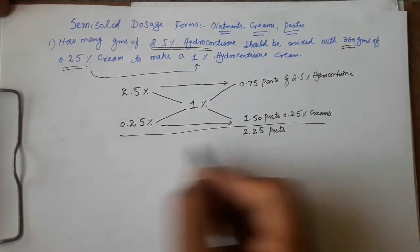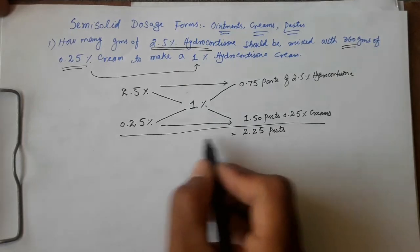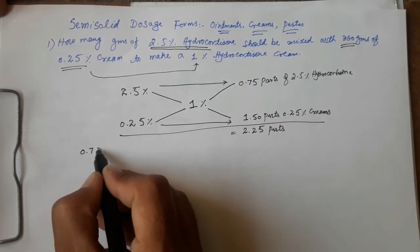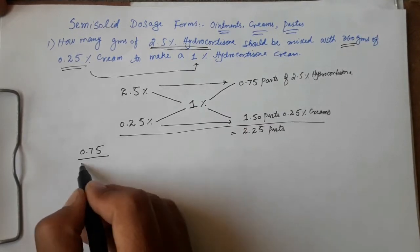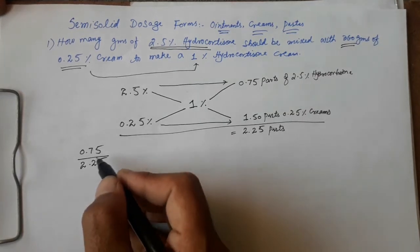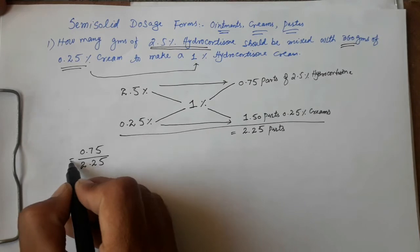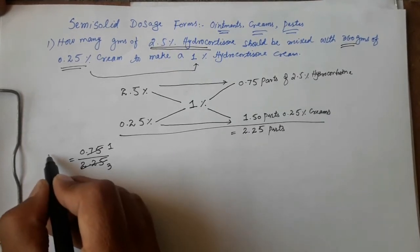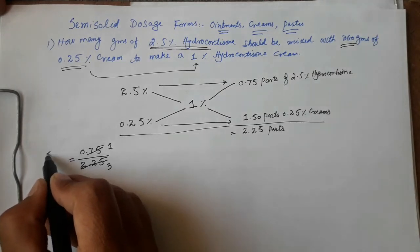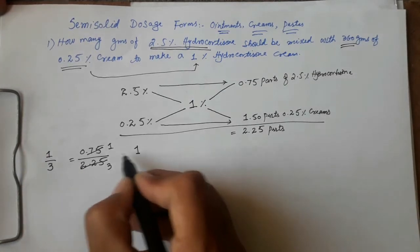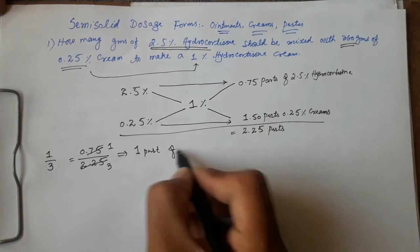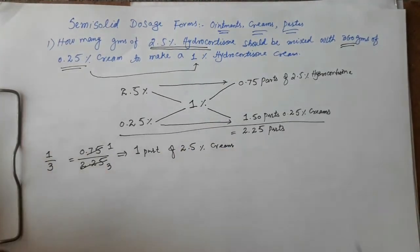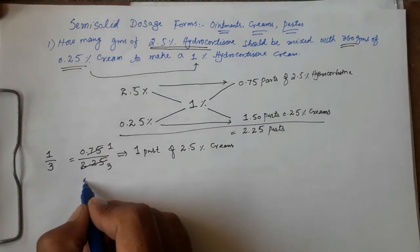So we have a total of 2.25 parts, in which 0.75 parts are of 2.5% hydrocortisone cream. If we simplify 0.75 divided by 2.25, we get 1/3. This means that one part of 2.5% cream should be used to make this 1% final dilution.